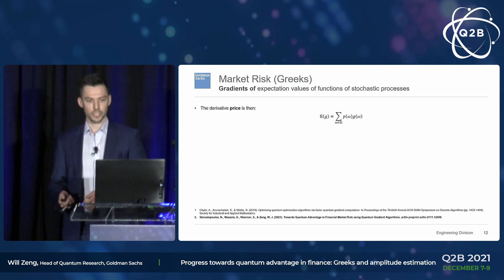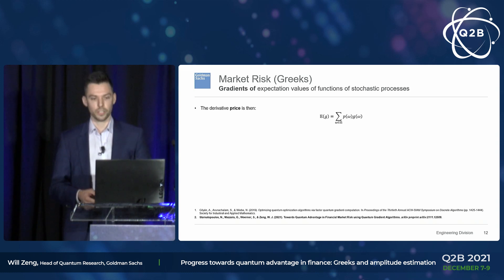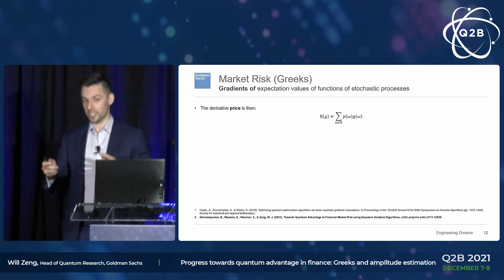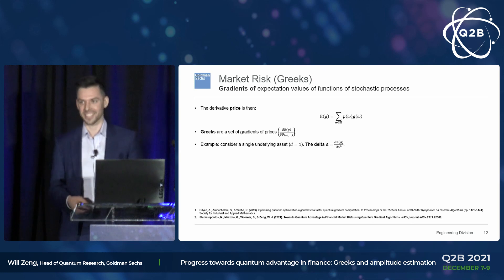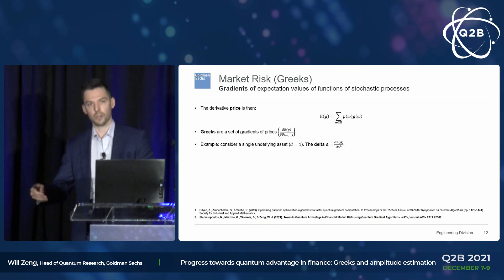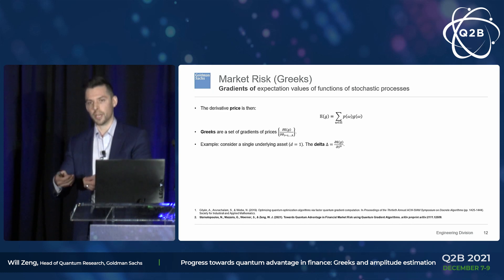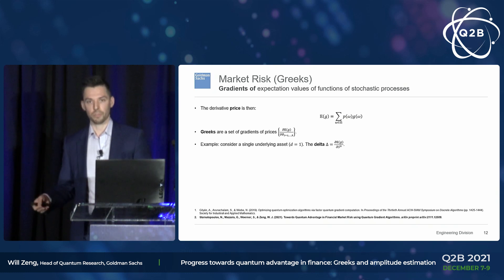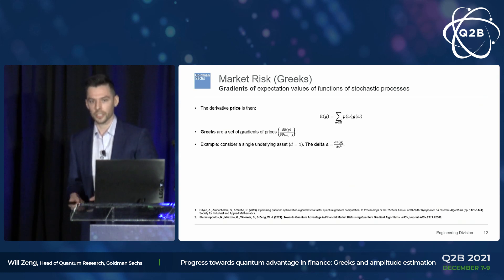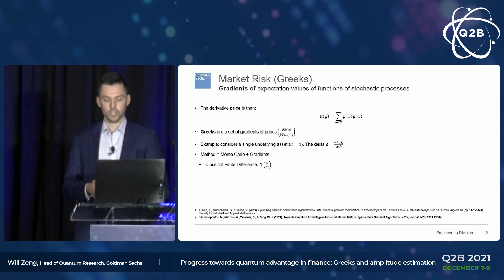The new extension is to look not just at the expectation value of prices, but also the gradient — I'll call it the gradient rather than 'derivative' to avoid confusion. We want the gradient of that expectation value with respect to model parameters theta. This tells you how sensitive the price is to changes in your model, which is important for hedging risk — a core part of our business. A simple example is the delta: the rate of change of the derivative price with respect to the initial stock price today.